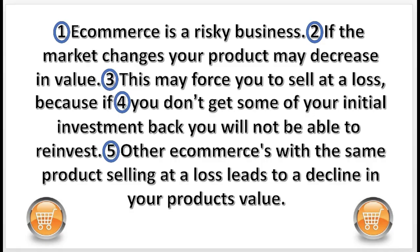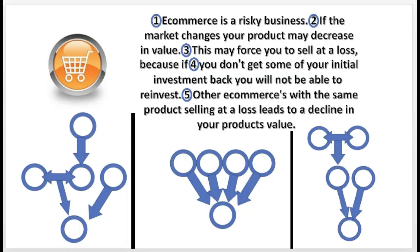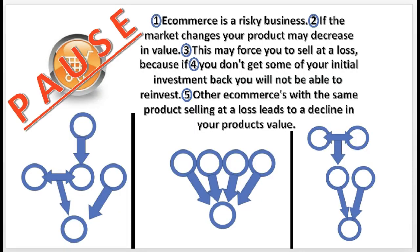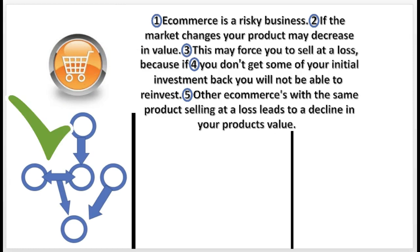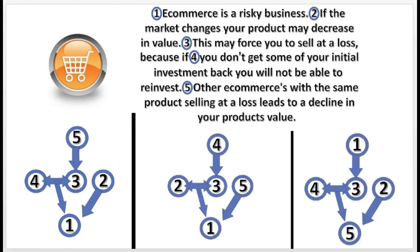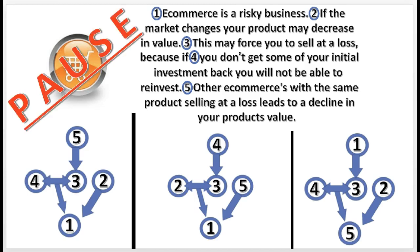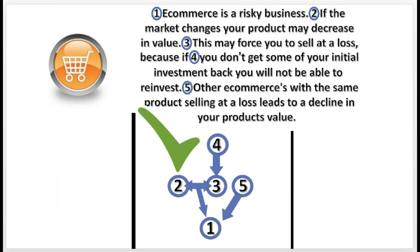Here's the first practice problem. Select the correct diagram for the argument, then choose the correct sequence of statements. Notice that 2 and 3 support 1 conjointly, 5 supports 1 independently, and 4 supports 3.